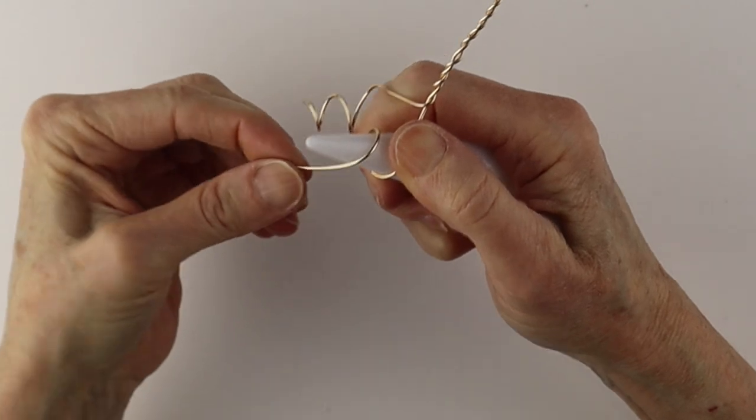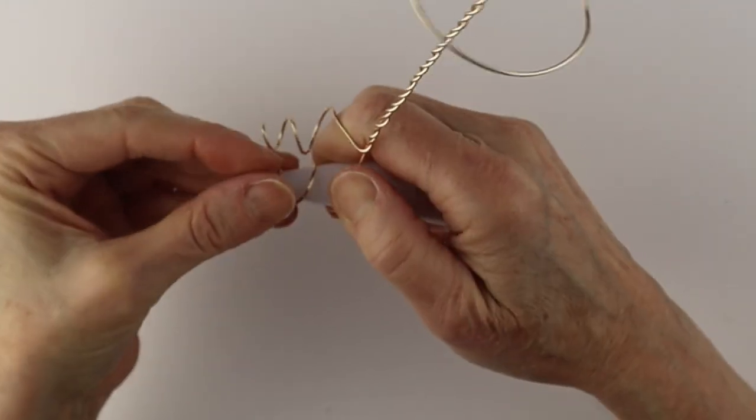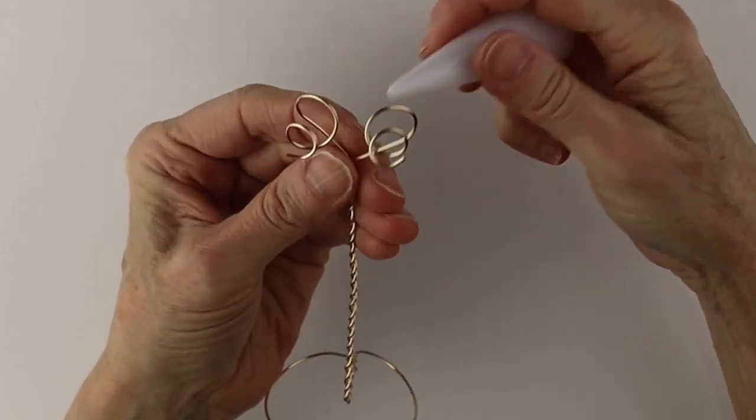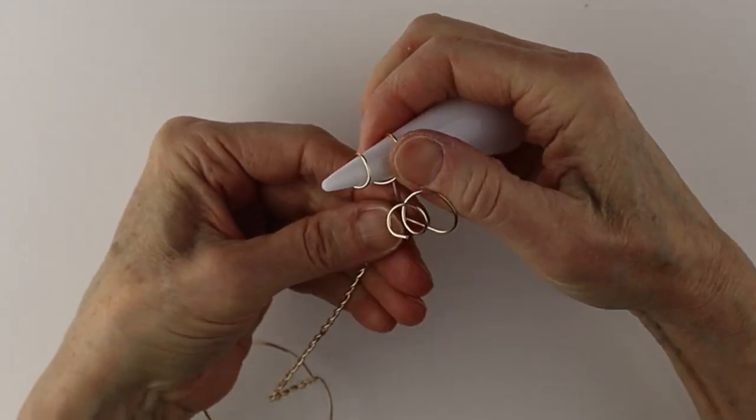So just hold it in place. Wind it around. So we have our two little coiled spirals there.